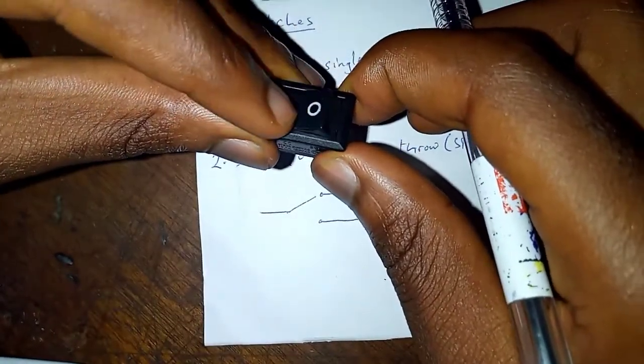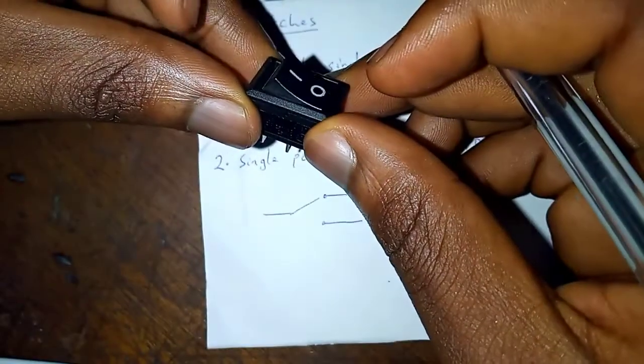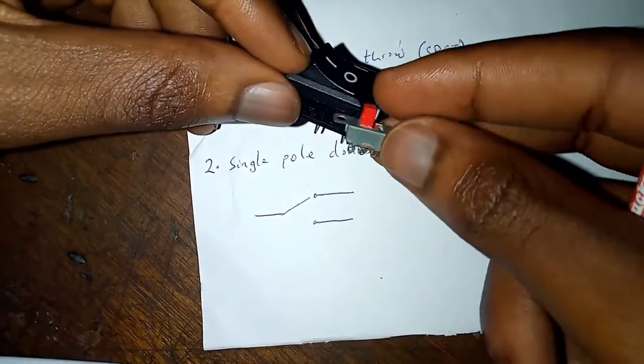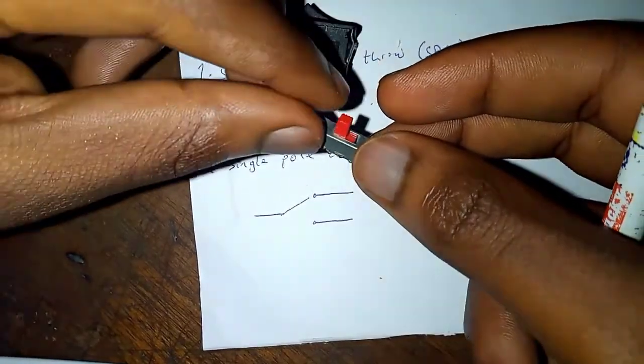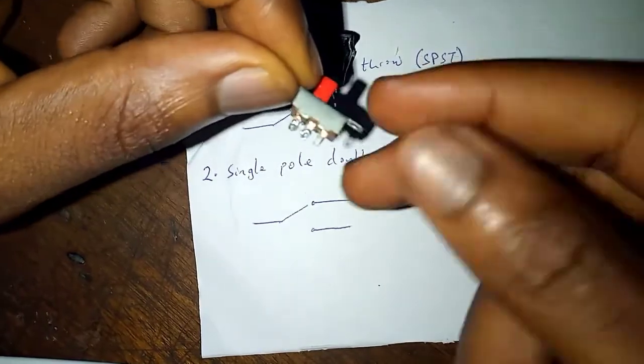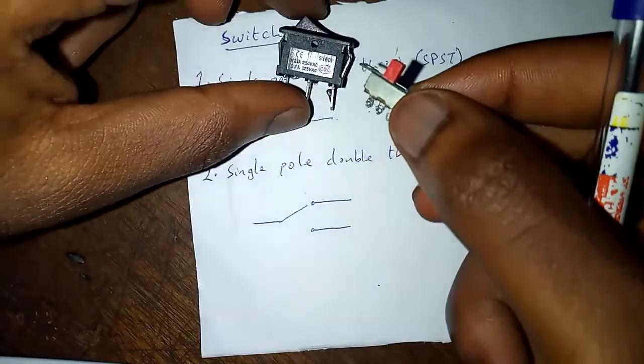So if you click once, it goes to one throw. You click again, it goes to the other throw. Another example is this. You can see one pole, two throws. Click, it goes here. Click, it goes the other way.